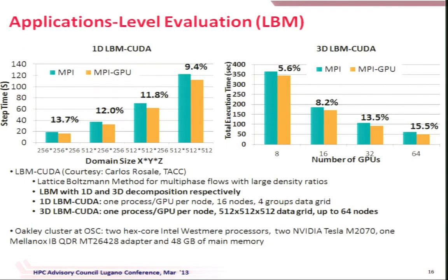Does it reflect real application performance — not just microbenchmarks? We worked with application scientists. With Dr. Carlos Rosales from TACC on a Lattice-Boltzmann Method (LBM) code with both 1D and 3D decompositions: with one process per GPU per node across 16 nodes, we see 10 to 13% improvement in end application execution time. For the 3D decomposition, scaling up to 64 GPUs, we achieve around 15% improvement, showing that end scientists can write applications easily and still extract performance.